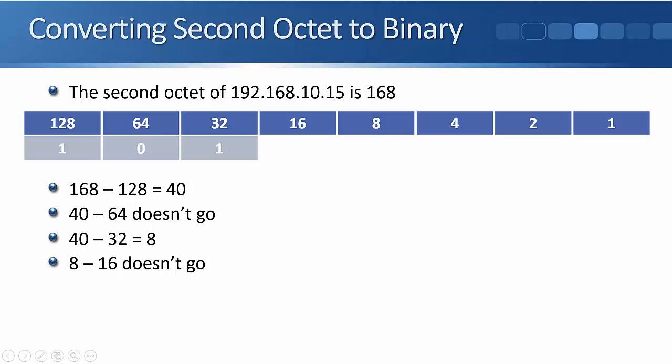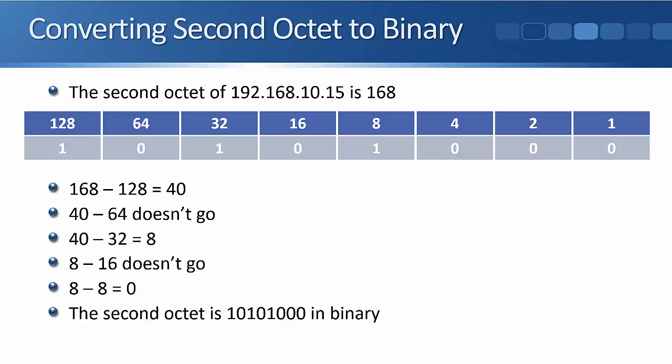And then 40 minus 32 gives us 8 left. 16 does not go into 8, so we'll put a 0 in there. 8 does go into 8, so we put a 1 in, and 8 minus 8 gives us 0 left, so we can just fill in the rest of the columns with 0. So 168 in binary is 10101000. For our final check, 128 plus 32 plus 8 does equal 168, so we got that one right as well.